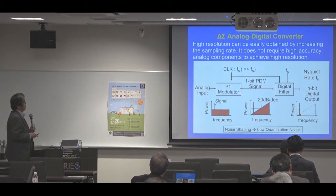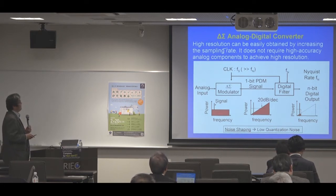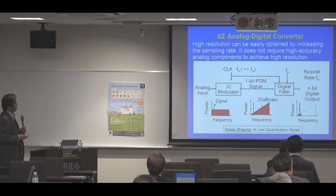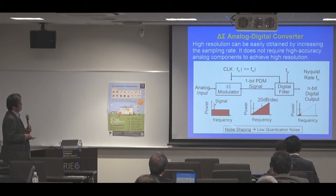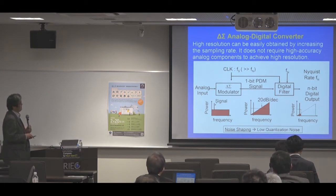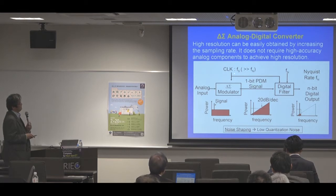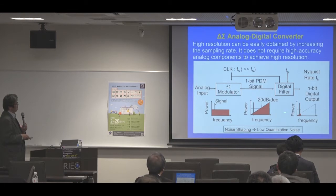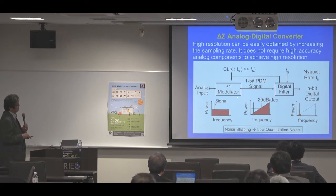Here I will briefly explain the delta-sigma ADC. Among various types of analog-to-digital converters, the delta-sigma ADC has a unique advantage: high resolution can be easily obtained by increasing the sampling rate, and it does not require high-accuracy analog components to achieve high resolution. This is a block diagram of the delta-sigma ADC consisting of a delta-sigma modulator and a digital filter. This modulator converts the analog input signal into a 1-bit pulse density modulated digital signal at a sampling frequency much higher than the Nyquist rate.